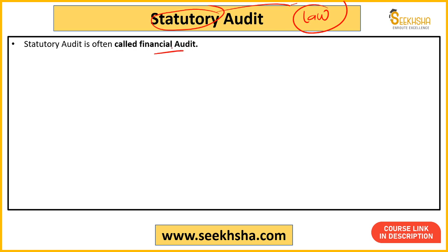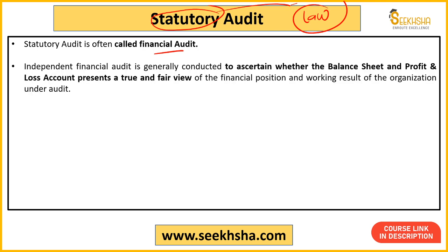A direct question can be formed from this: 'Which among the following audits is also known as financial audit?' — with options like Option A: statutory audit, Option B: secretarial audit, Option C: cost audit, Option D: tax audit. So questions from this topic come directly.